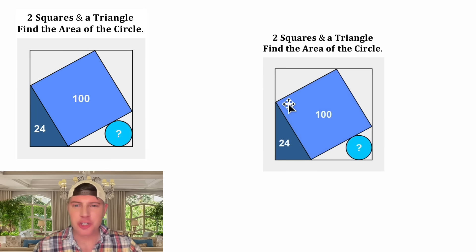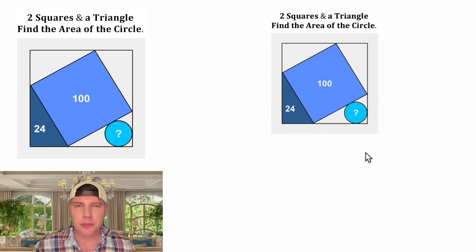Hey guys, this looks like a fun one. We're given two squares and a triangle. This 100 is for the area of the square and the 24 is for the area of the triangle, and it wants us to find the area of this circle. If you want to try it on your own, pause it right now because I'm going to solve it in three, two, one.